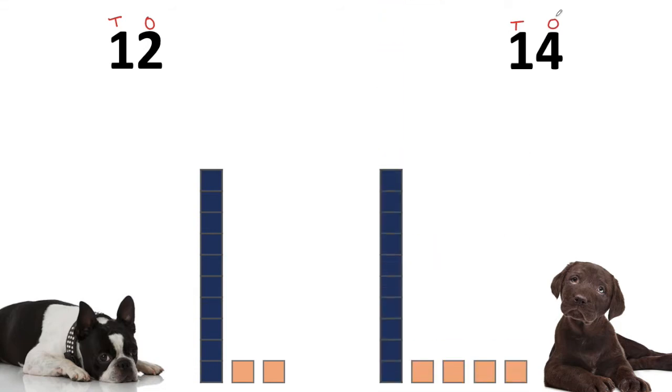When Opal and Bruno wanted to compare 12 and 14, they saw that they both had one ten. They weren't sure whether 12 was greater than or less than 14, so they decided to stack their ones on top of their tens to see who had more.